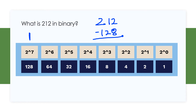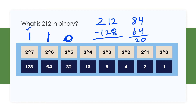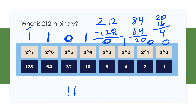Subtracting 128 from 212 gives us a remainder of 84, and that indicates there is a one in that bit position. So next we have an 84 remainder — can we take 64 from that value? Yes we can, so we subtract 64. That's a remainder of 20. Can we take 32 from 20? The answer is no, so it's a zero in that bit position. Can we take 16 from 20? Yes we can, and we are left with a remainder of 4. So we'd have a zero, a one, and then zero, zero, zero in the remaining positions. So 212 in binary is 1, 1, 0, 1, 0, 1, 0, 0.